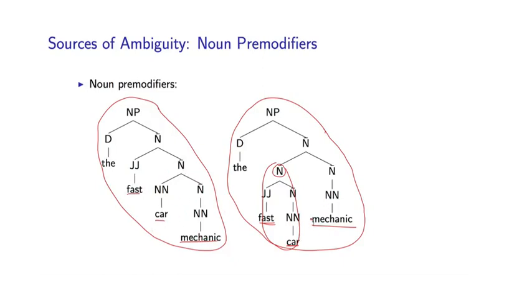So an ambiguity here, is it a mechanic who works on fast cars, or is it a car mechanic who is fast? And we end up with two different structures. This kind of ambiguity within noun pre-modifiers is absolutely prevalent, and you see it everywhere in sentences in English and other languages.